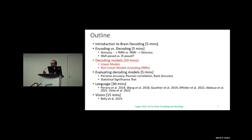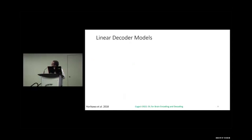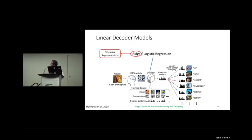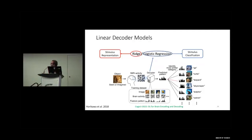There are two types of decoder models: linear and non-linear. In linear decoder models, given an image and fMRI activity, we feed the fMRI to a logistic regression model for classification or a ridge/linear regression model for stimulus representation reconstruction. Using ridge regression gives back a continuous stimulus vector; using logistic regression gives classification across different categories.